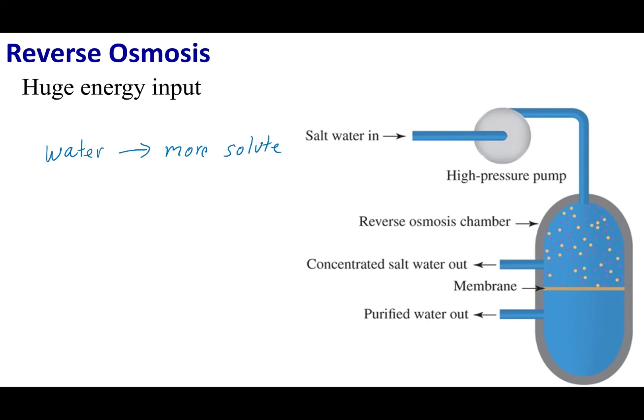And so in reverse osmosis, what I'm going to do is drive this reaction backwards. I'm going to take water out of solution or a place where there is more solute. Now to do a reverse osmosis process, I'm going to have to apply the osmotic pressure, but I got to go beyond the osmotic pressure. And so that's why these processes take a lot of energy.